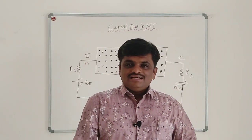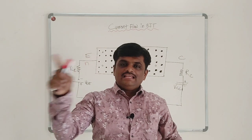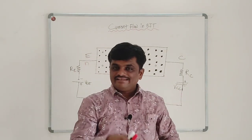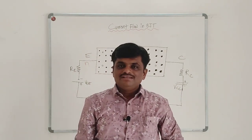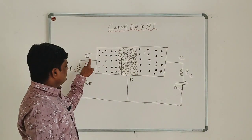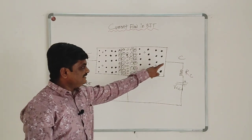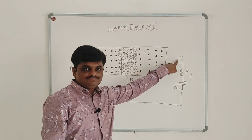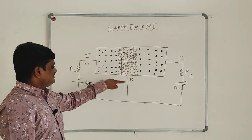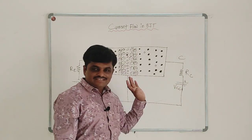Here I have drawn the schematic of an NPN transistor connected in common base configuration. In this configuration, emitter is the input terminal, base is common, and collector is the output. With the help of these two supply voltages, the base-emitter junction is forward biased and the collector-base junction is reverse biased.